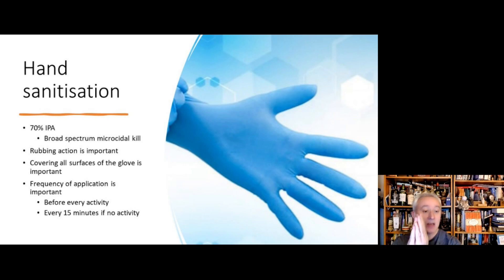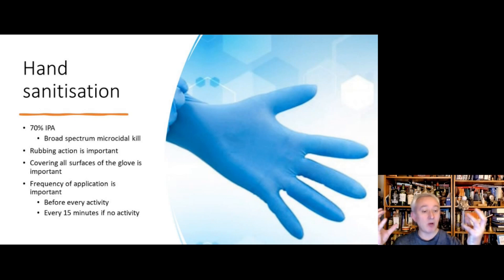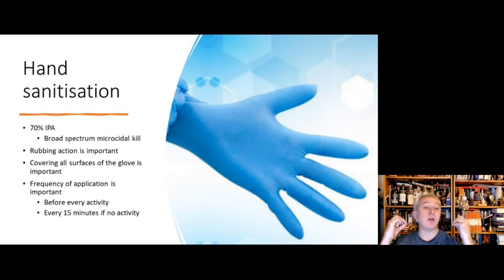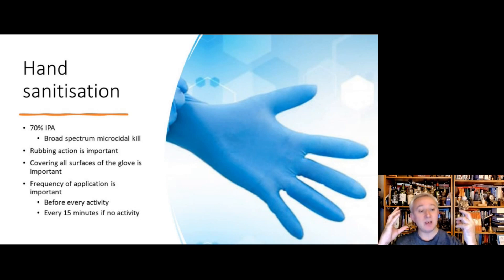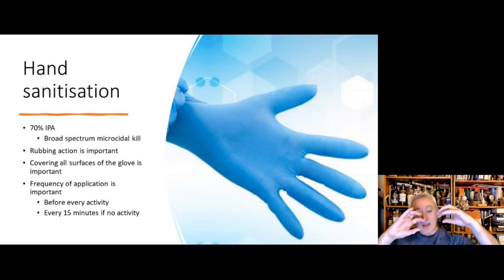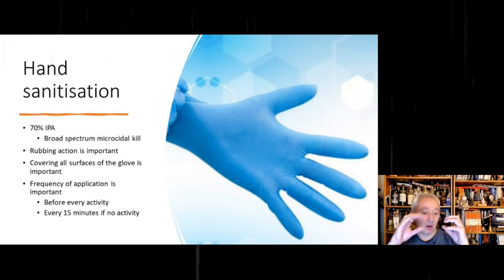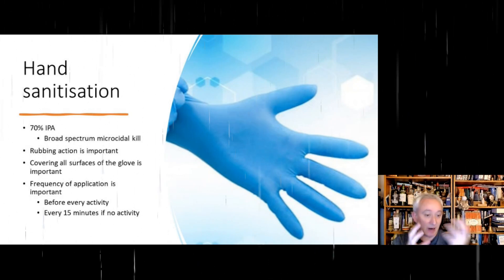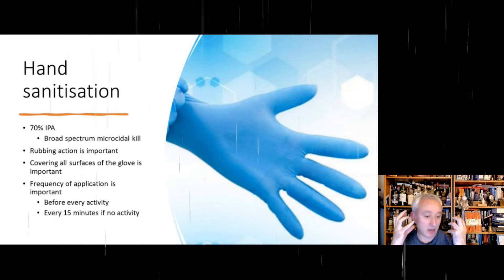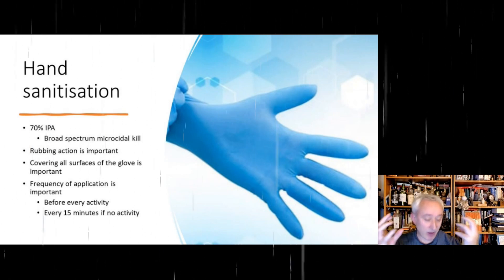Hand sanitization involves the application of 70% isopropyl alcohol, or IPA. This gives a broad-spectrum microbial kill. IPA penetrates the microbial cell wall and causes protein denaturation, stopping the mechanisms of the microorganism's cellular functions and preventing replication.